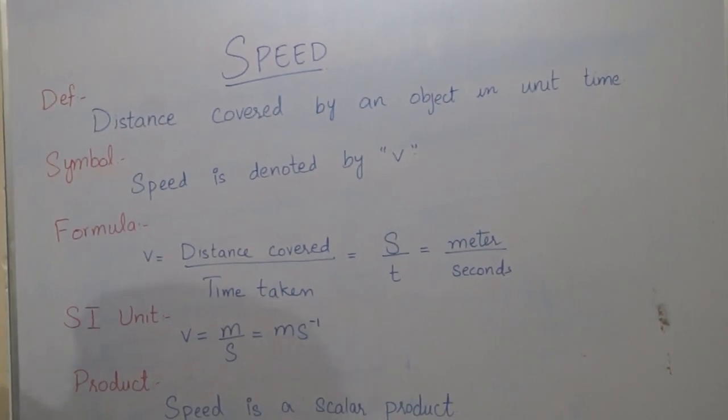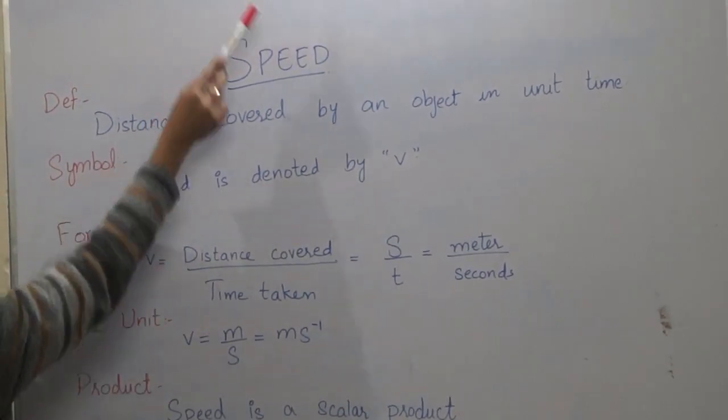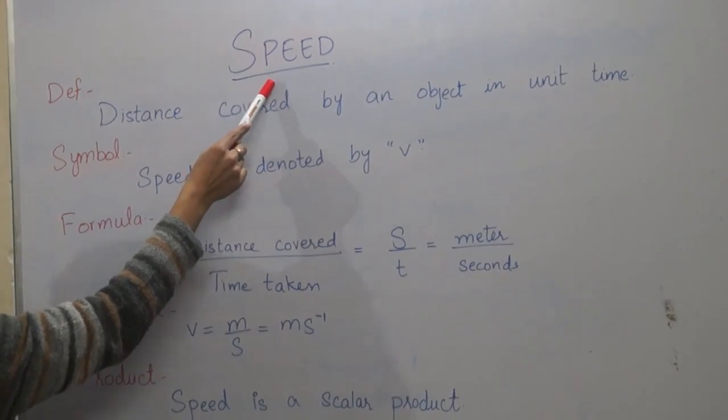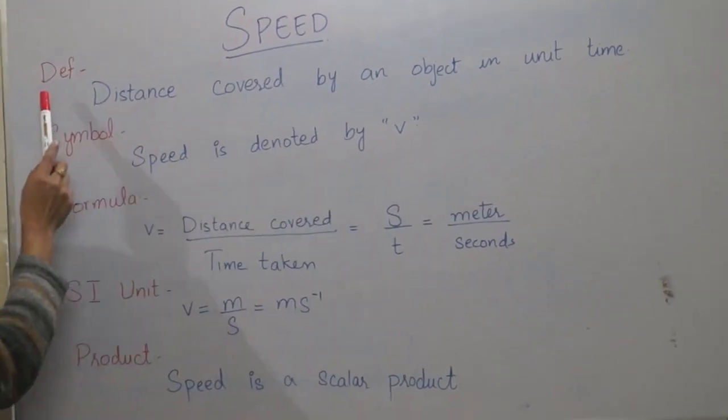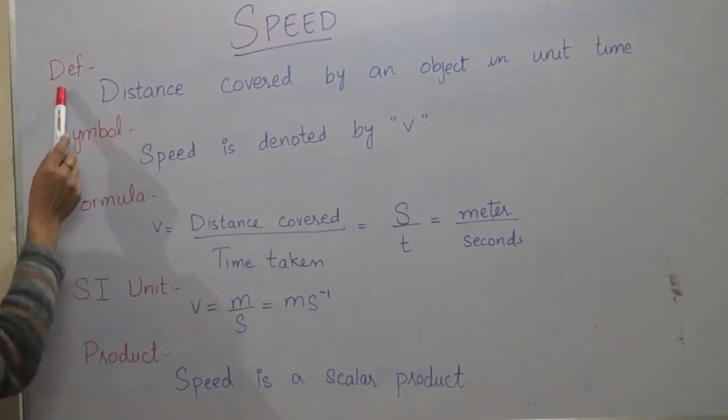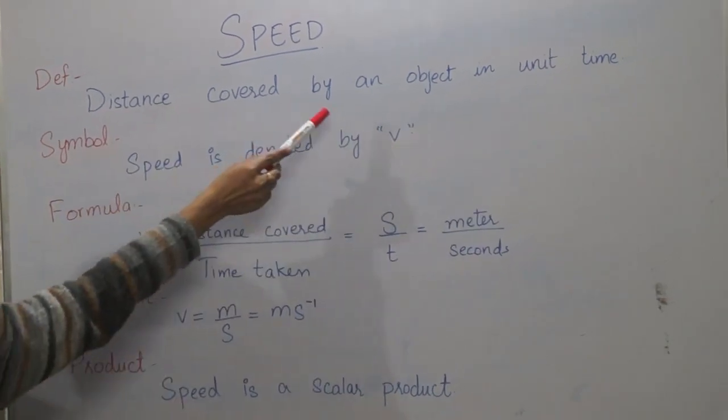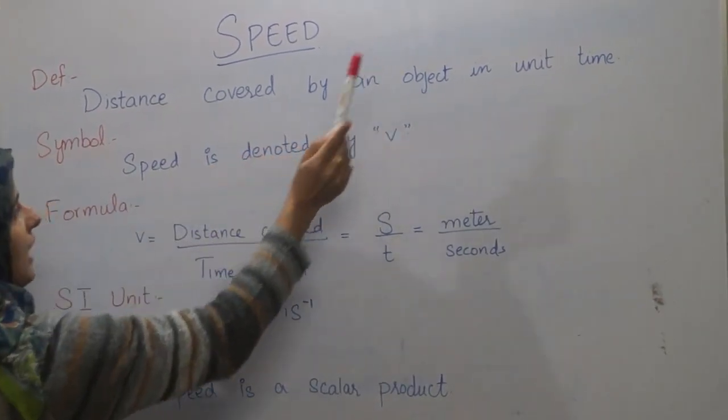Today we are going to learn about the very important topic of physics, speed. How we define speed? Speed is a distance covered by an object in unit time.